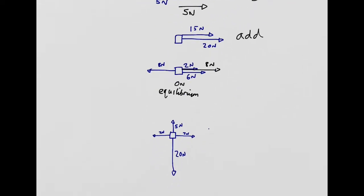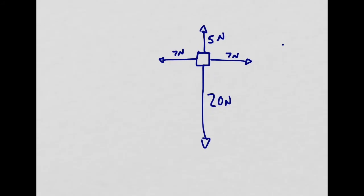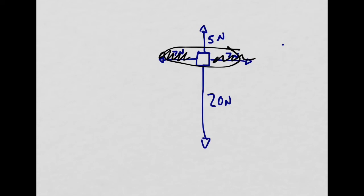Let's go to this slightly more complicated example. The forces in this one are acting at right angles to each other, so it's a little bit more complicated. But actually this particular case is pretty simple. You can see that the two 7 newton arrows acting in opposite directions are in equilibrium with each other, so they're going to cancel out — we end up with 0 newtons left and right, so we can ignore those entirely. We're just left with a 5 newton arrow up and a 20 newton force down, giving a resultant force of 15 newtons down. Because they're in opposite directions, you subtract: 20 minus 5 gives you 15.